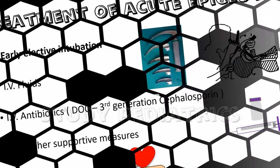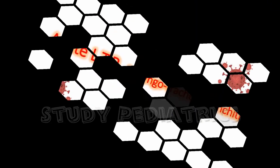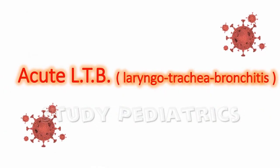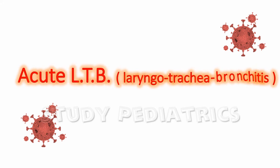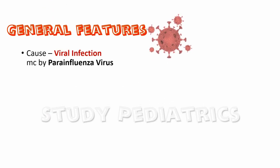Now let's see the second cause of late onset stridor: acute laryngotracheobronchitis, or LTB in short. As the name suggests, the larynx, trachea, and bronchus are all involved in this condition. The disease starts from the larynx and gradually goes down to the bronchus, and so does the stridor. The cause of acute LTB is mainly viral, with the most common being the parainfluenza virus.